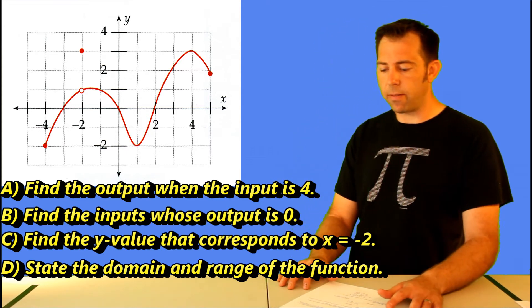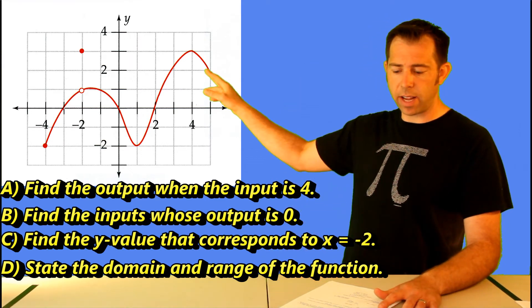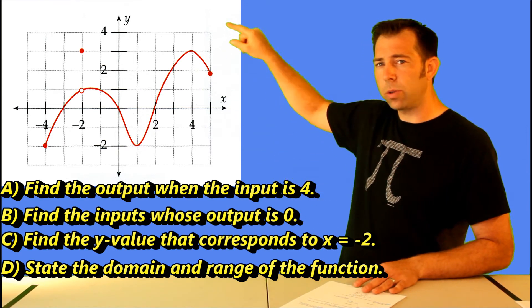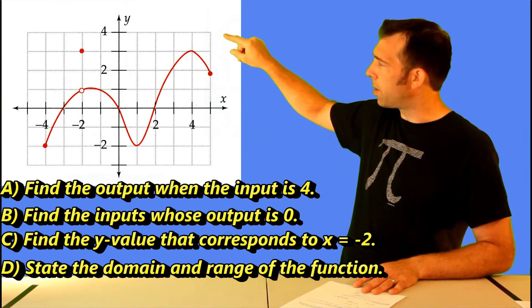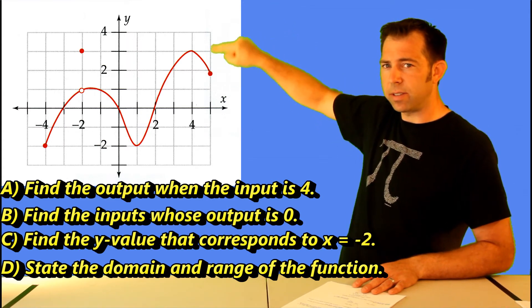On c, you find the y-value that corresponds to when x equals negative two. So just go over to x equals negative two and you can see that the y-value, you look up and there's actually a hole in the graph. And above it you see a solid dot. So that's just telling you that when x is negative two, the y-value is actually three.